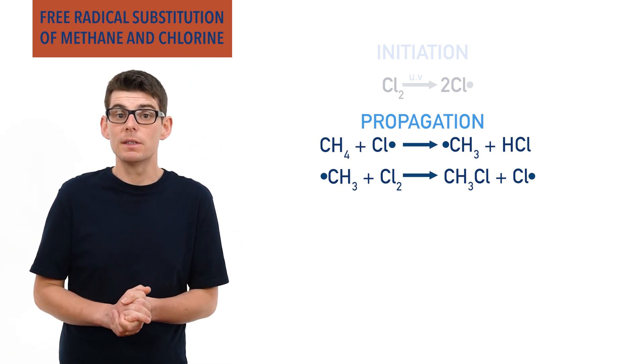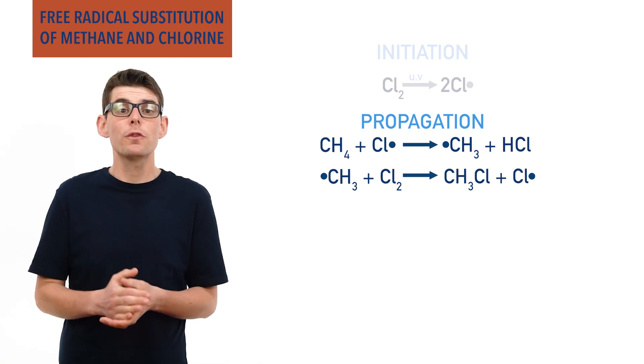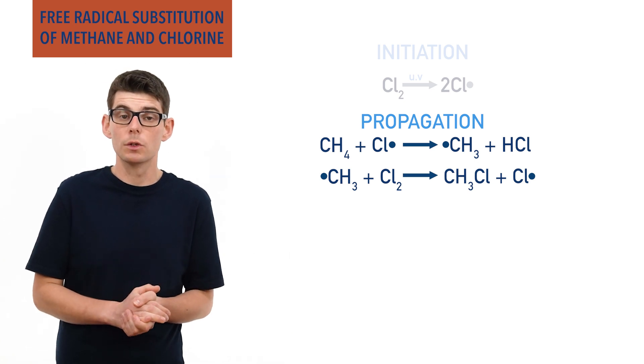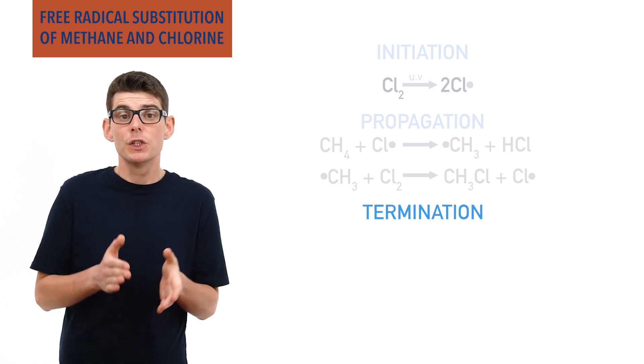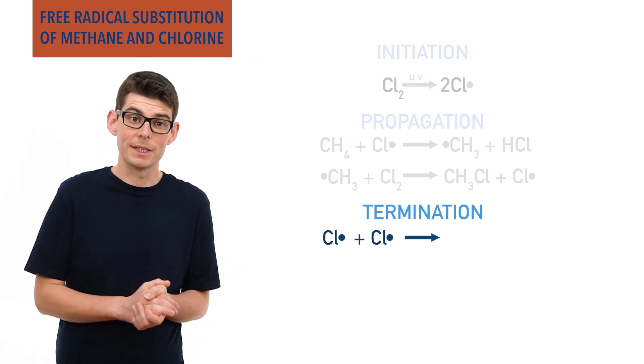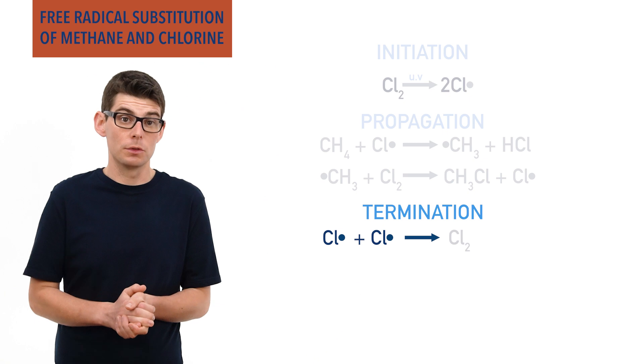Finally, the two radical species can combine together to form a stable non-radical molecule in a termination step. There are several possibilities for this. Two chlorine radicals can combine together to reform a chlorine molecule, Cl2.